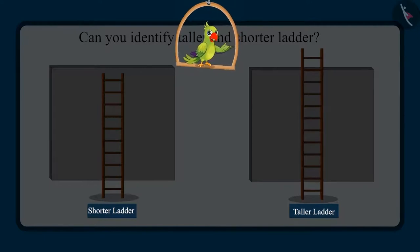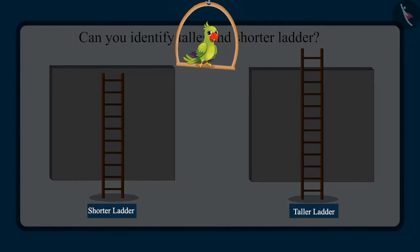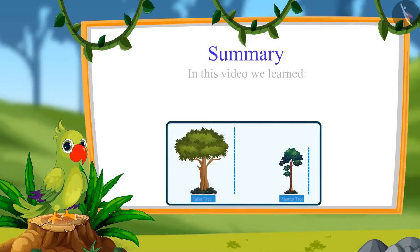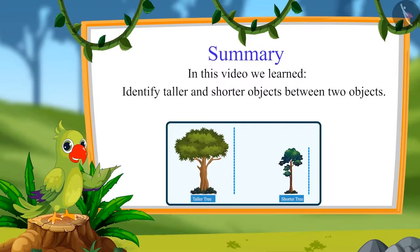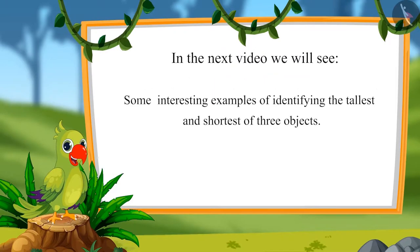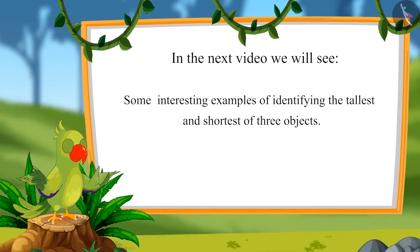So children, I hope that you enjoyed identifying and comparing taller and shorter objects. Now you can identify tall and short objects around you and compare them. That's all for today. In this video we learned to identify taller and shorter objects between two objects. In the next video we will see some interesting examples of identifying the tallest and shortest of three objects. Till then, bye children!